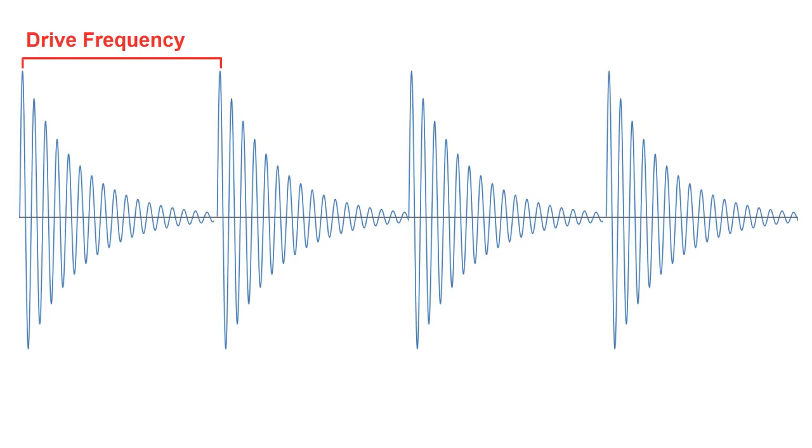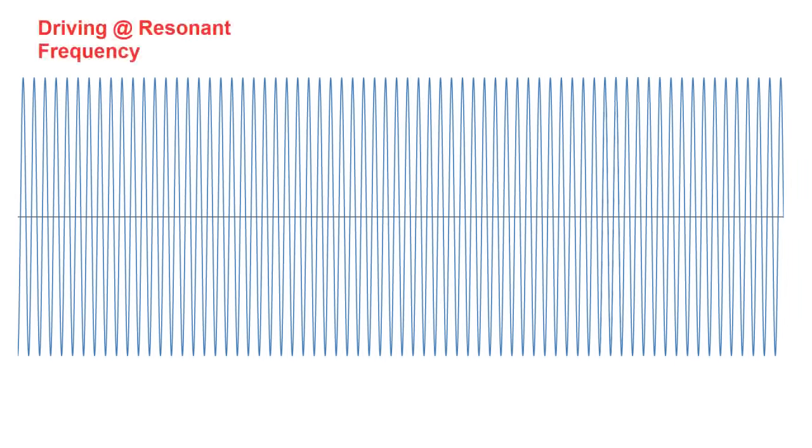So that worked pretty well, but the output is a series of damped resonant oscillations. After seeing this, the first thing I wondered was whether or not I could just drive the coil at its resonant frequency and get a higher power output, which would look like this.